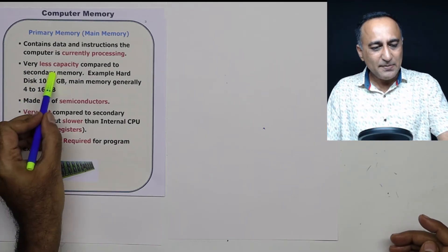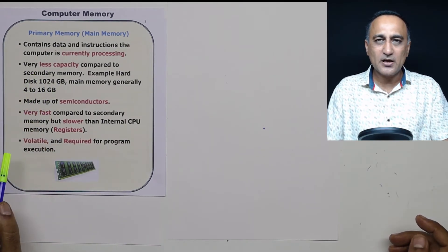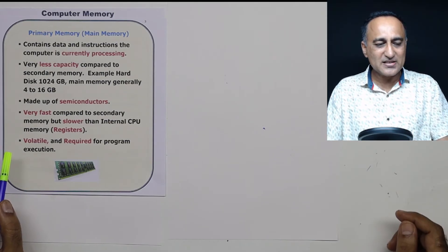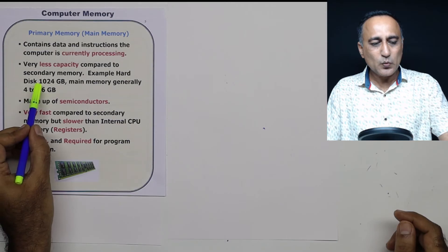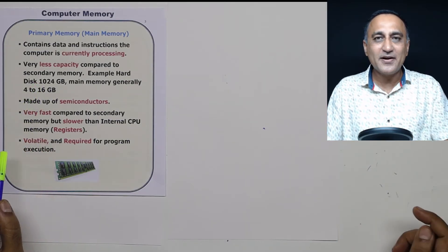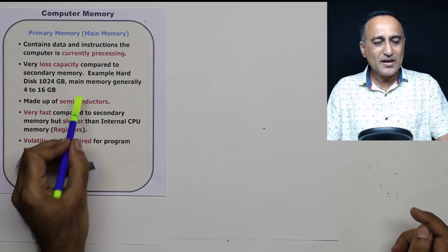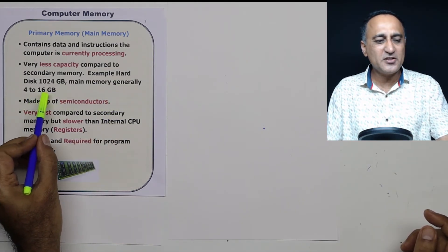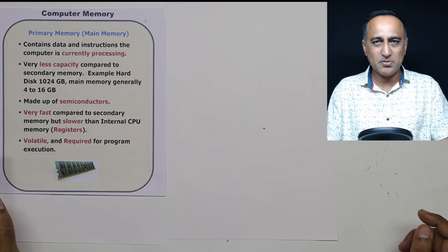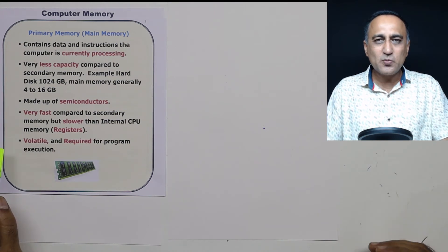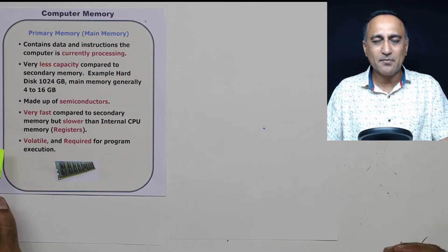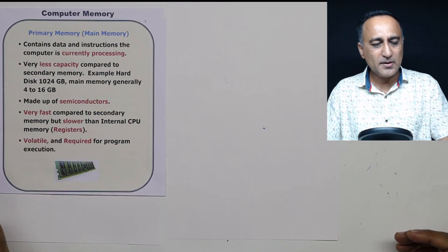It has limited capacity as compared to the secondary memory. For example, if you have typically looked at your hard disk, your hard disk will have 1 TB or 500 GB, whereas your main memory on most of the machines is going to be anywhere from 2 GB, 4 GB, 8 GB to 16 GB. Because why it is smaller? Because not everything which is on the hard disk is going to run at the same time. Only the things which are required to run at that point of time are loaded onto the main memory.